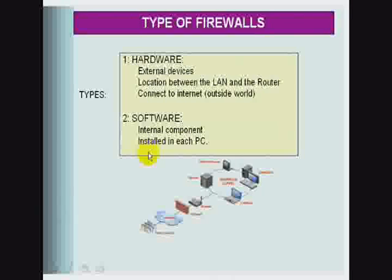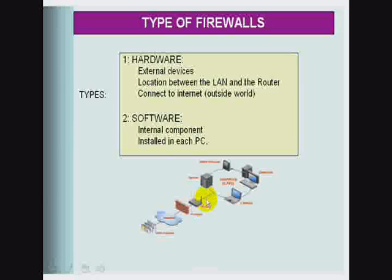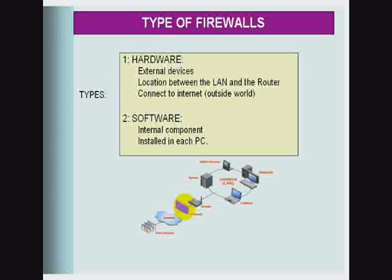There are two types of firewalls. The most basic classification falls into hardware firewalls and software firewalls. Hardware firewalls are considered external and software firewalls internal. Hardware firewalls are normally situated between your network and the connecting router. As you can see in the graphic, this is your local network, this is the router, and this is the hardware firewall. On the other hand, we have the software firewall, which is a software component, also called internal.